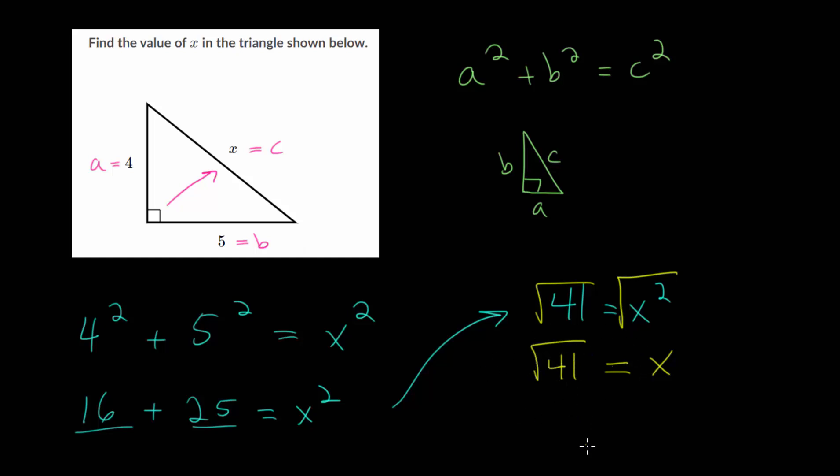So we just have the square root of 41, and we can ask ourselves, what number, when multiplied by itself, gives us 41? And that number is not a whole number.